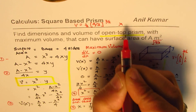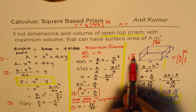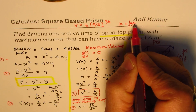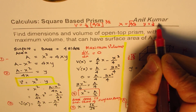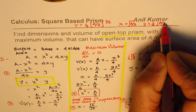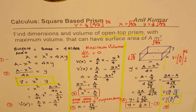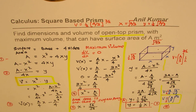To summarize all the relations: X = √(A/3), Y = (1/2)·√(A/3), so the height is half the length or width of the base, and the maximum volume is V = (1/2)·(A/3)^(3/2). I'm Anil Kumar — I hope that helps. Thank you and all the best.